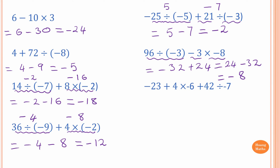Next one: negative 23 plus 4 times negative 6 plus 42 divided by negative 7. Do multiplication and division first. Positive 4 times negative 6 gives negative 24. Then 42 divided by negative 7 — positive divided by negative gives a negative — 42 divided by 7 is 6, so negative 6. Rewriting: negative 23 minus 24 minus 6. They're all negative, so we just add 23 plus 24 plus 6. 24 plus 6 is 30, plus 23 is 53, so negative 53.